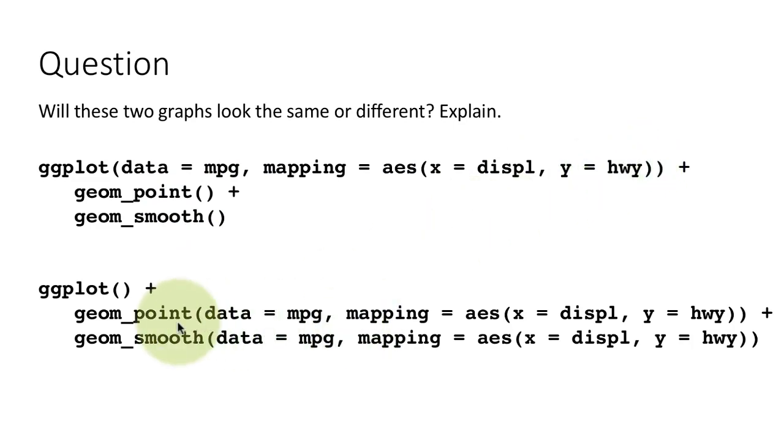Here too, although we have not put anything in the ggplot call, we have not specified the data, we have not specified the mapping. But the two layers have exactly the same data and mapping with each other. And they are the same as what you see here. Therefore, effectively, they will produce the same result.